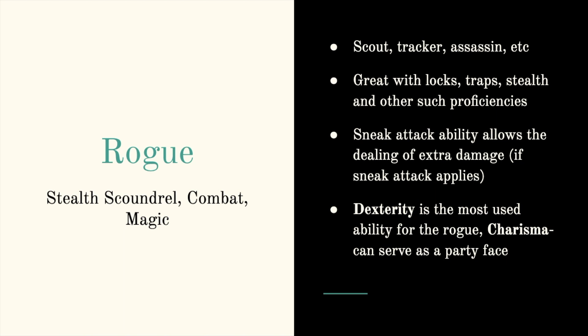Next is a rogue — stealth scoundrel, combat and minimal magic. Rogues can be scouts, trackers, assassins, etc. They're great with locks, traps, stealth, and other proficiencies. If you need someone to go ahead and stake out how many guards there are or sneak around and get a good look, a rogue is what you want. They have a sneak attack ability that allows dealing of extra damage if sneak attack applies. Dexterity is the most used ability for the rogue, but they're also charismatic — they can serve as a party face and are very deceptive when it comes to lying to an NPC to get their way.